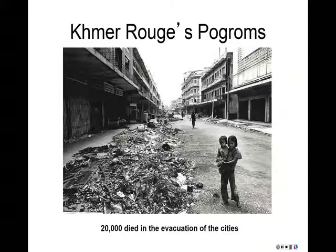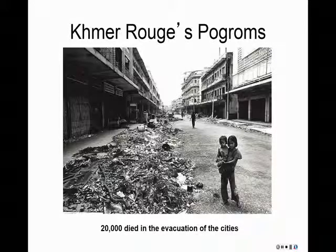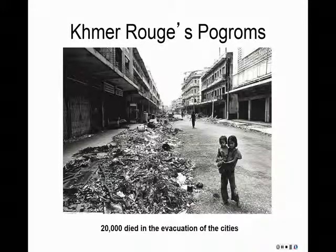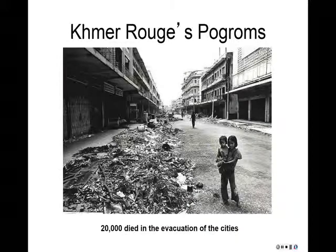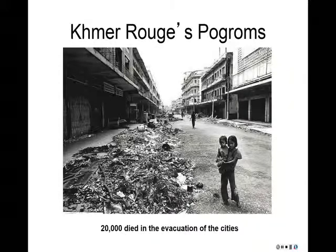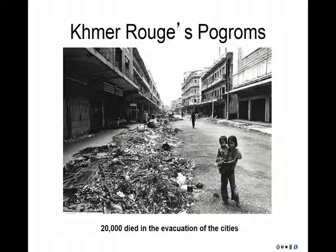Anything considered modern — markets, education, technological advancements — was destroyed. The Khmer Rouge took Cambodia back to an agrarian lifestyle and evacuated everyone from the cities. You also had the Khmer Rouge increasingly being led by younger people, even children — ten- and twelve-year-olds wielding weapons against the entire population. This was an indoctrination of youth into the child soldier mentality.